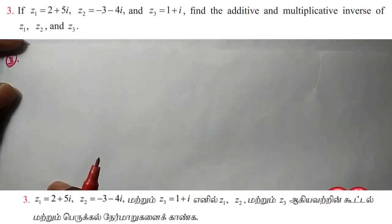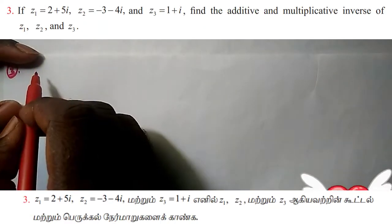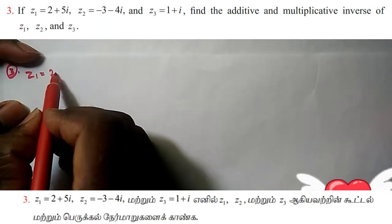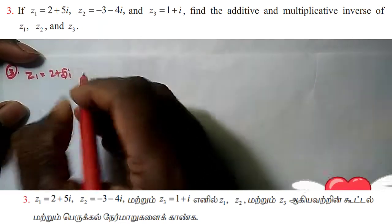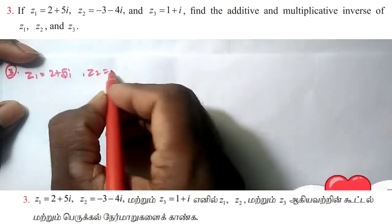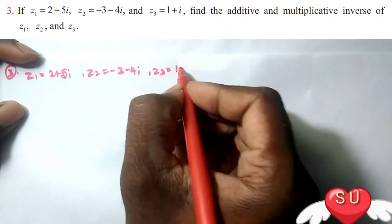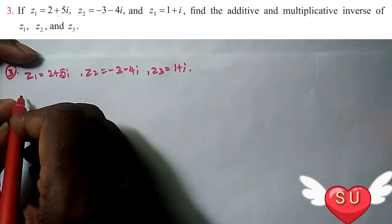Hi friends, welcome. In this video, we have a problem from Book 1. If z₁ = 2 + 5i, z₂ = -3 - 4i, and z₃ = 1 + i, find the additive and multiplicative inverse of z₁, z₂, and z₃.